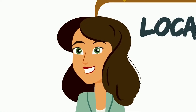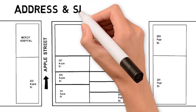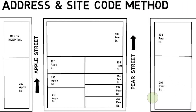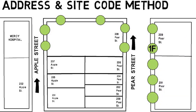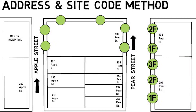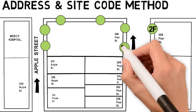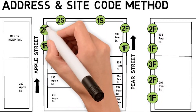So let's begin with a location method that's pretty common in city inventories: the address and site code method. In this method, for every address or property parcel, trees get coded with something like 1F to mean the first tree in front of the house, 2F to mean the second tree in front of the house. The number sequence begins again at the next house, and the different letters indicate which side of the property the tree is on — F for the front, S for the side, R for the rear, etc.